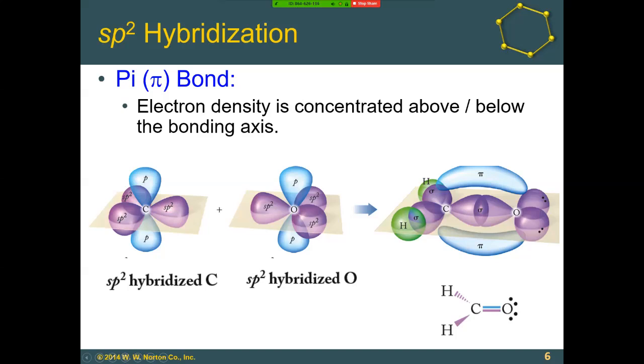Oxygen also has sp2 orbitals in a trigonal planar shape with a single p orbital pointing up and down. In formaldehyde, carbon and oxygen have sp2 orbitals that overlap to form a sigma bond—one of the two bonds—and their p orbitals above and below the plane also overlap.